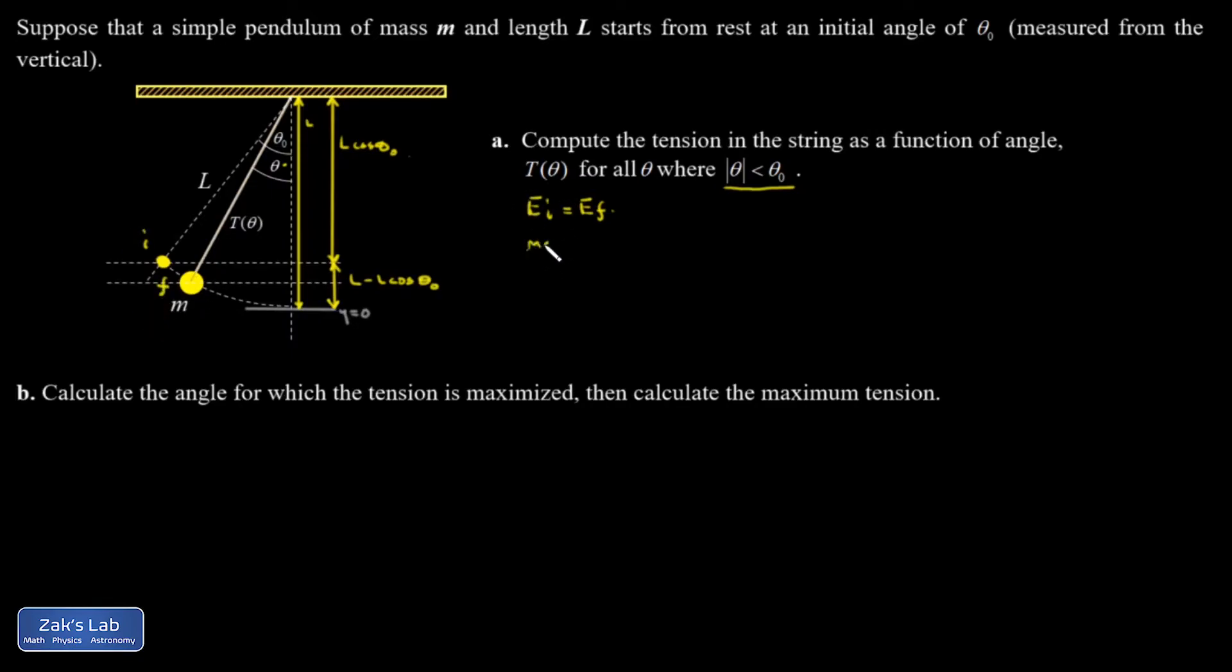In my initial state, I've got mgy initial. That's all my energy. In the final state, I've got mgy final plus some kinetic energy. What's y initial? That's L minus L cosine theta naught. How about y final? L minus L cosine theta when I'm located at that arbitrary angle theta.